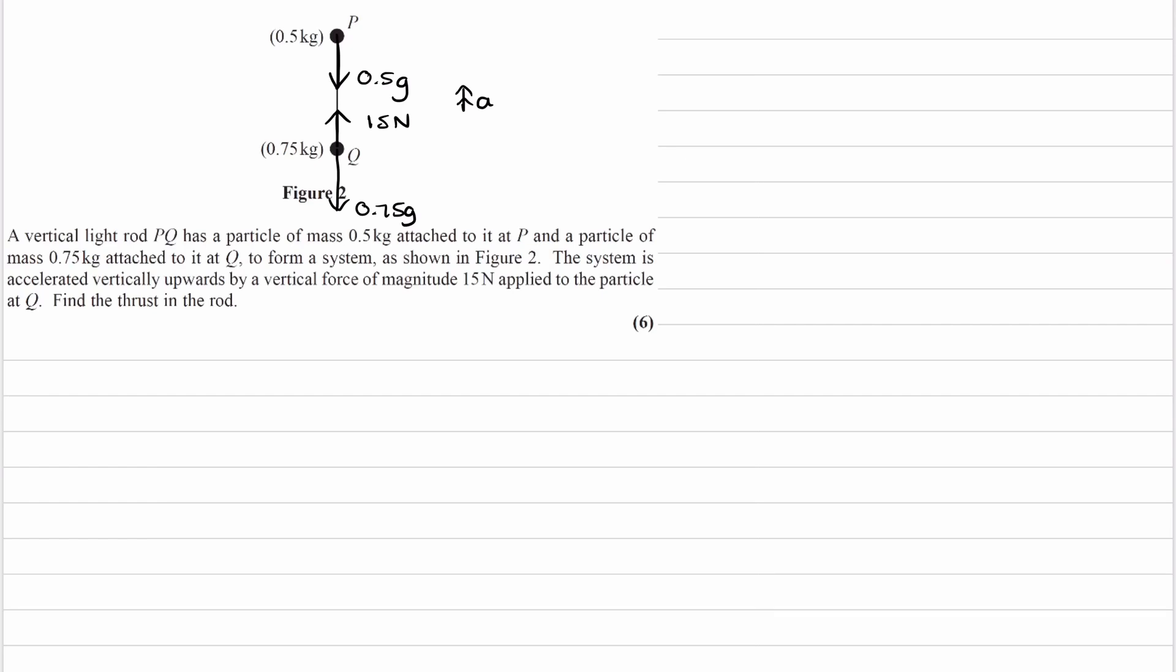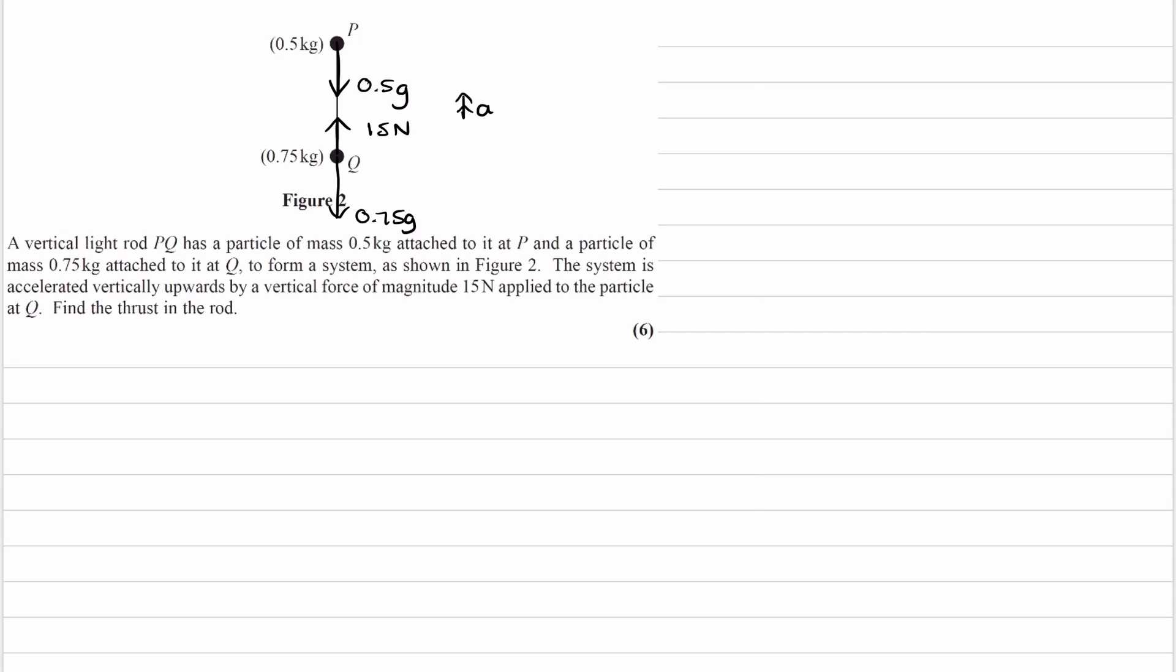We need to think about which direction the thrust in the rod will be. Let's think of this intuitively. Object P is experiencing upward acceleration. Right now we only have a downward force of 0.5g acting on P. Therefore there must be some upward force, and that would be the thrust. So T minus 0.5g would be the overall upward force causing P to accelerate upwards.